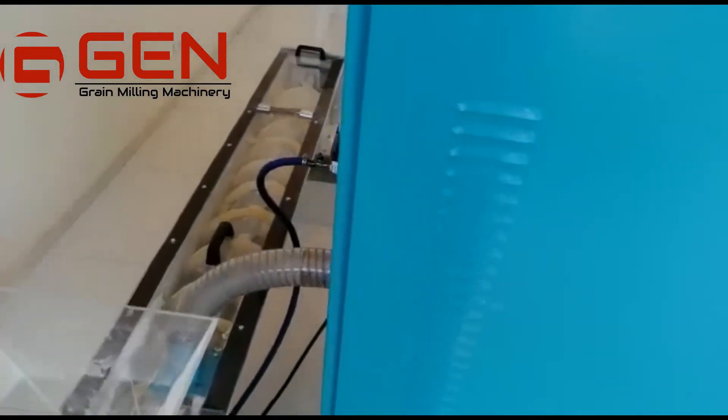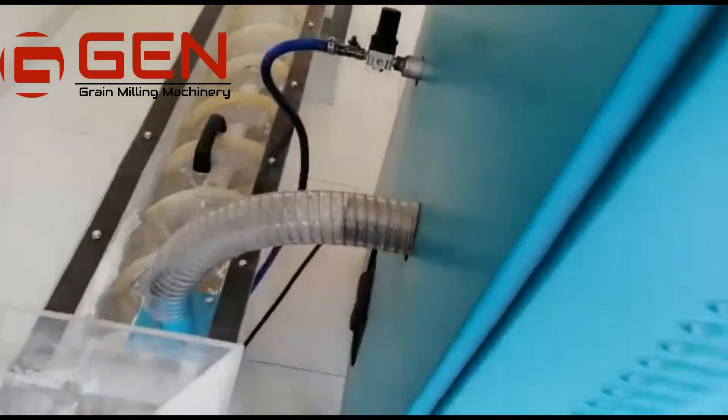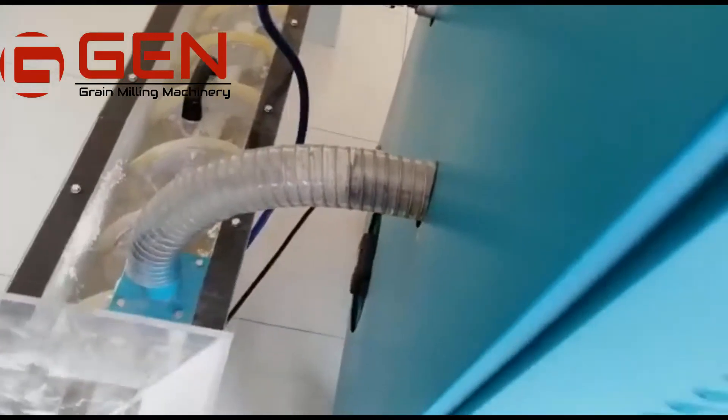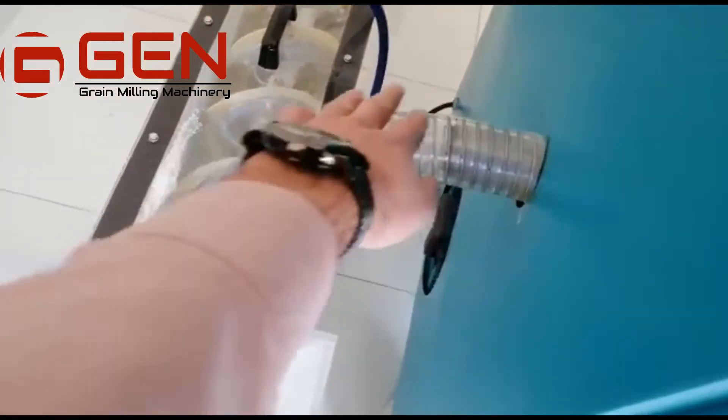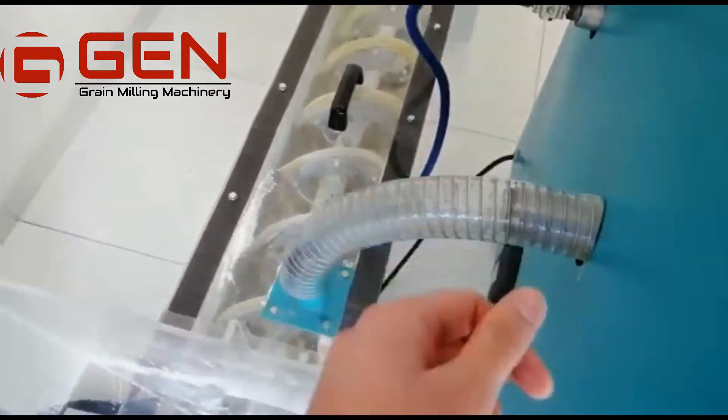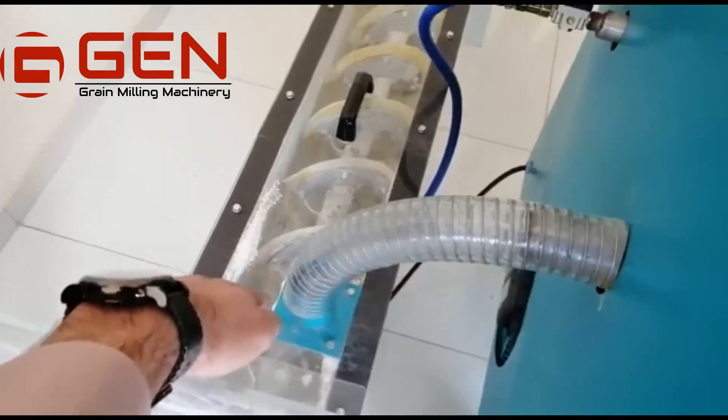18% oxygen in the dry air is transformed into ozone. Through this pipe, the ozone comes out from the machine and enters the screw conveyor.